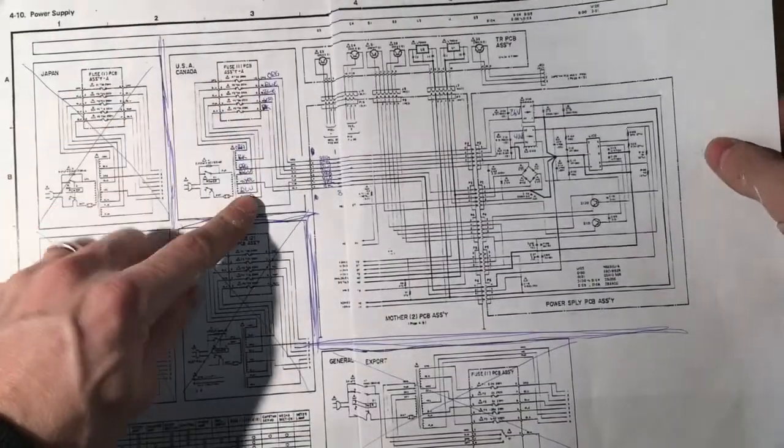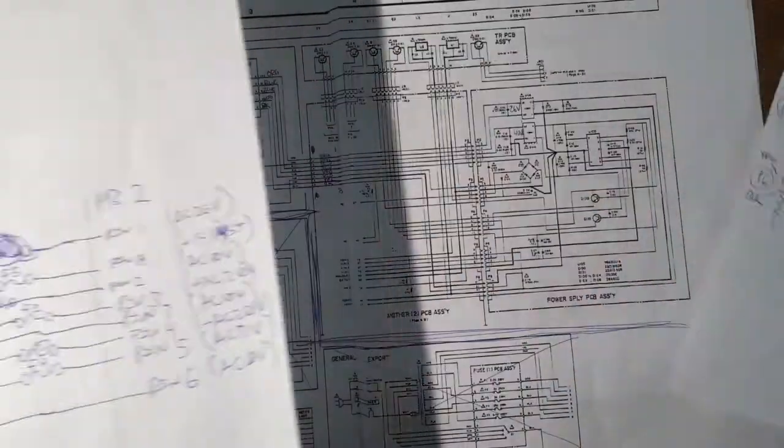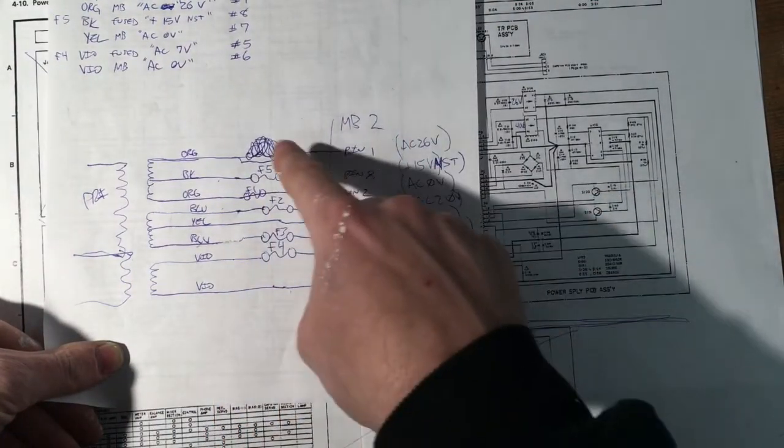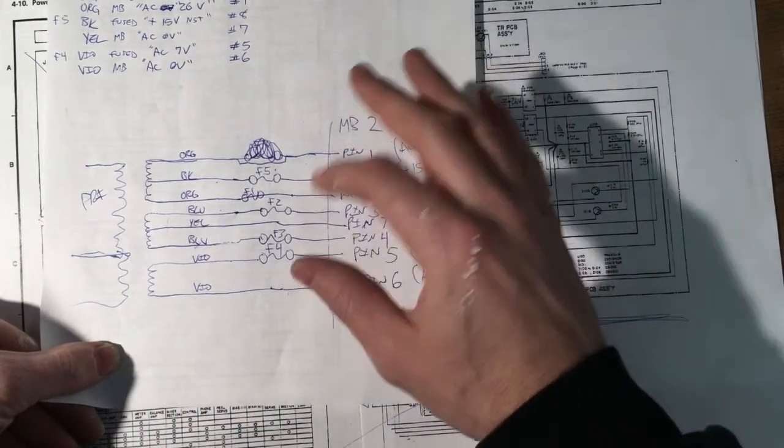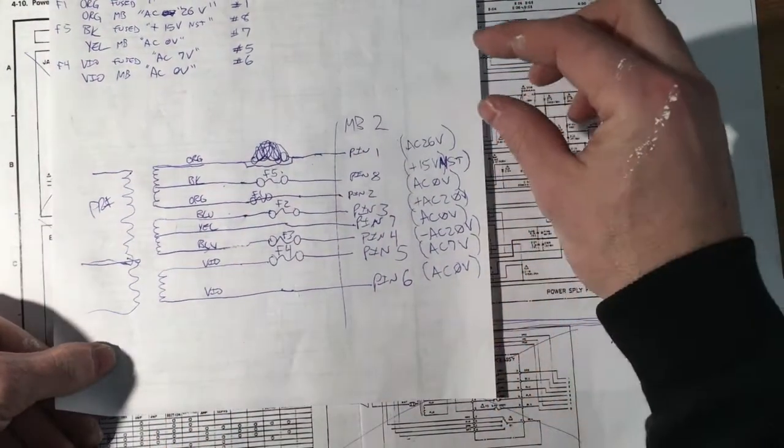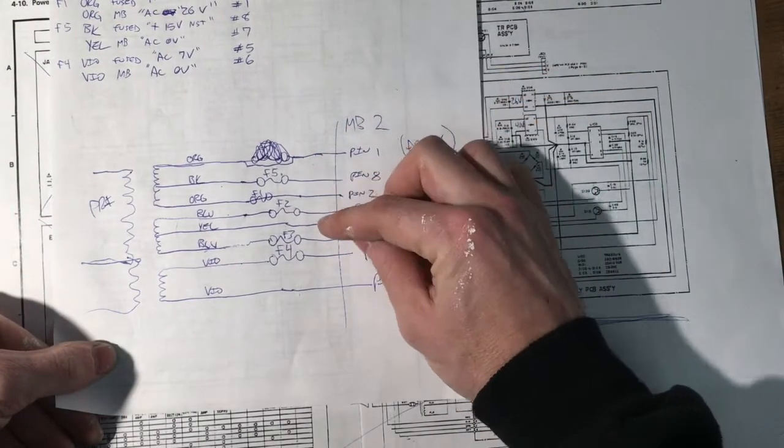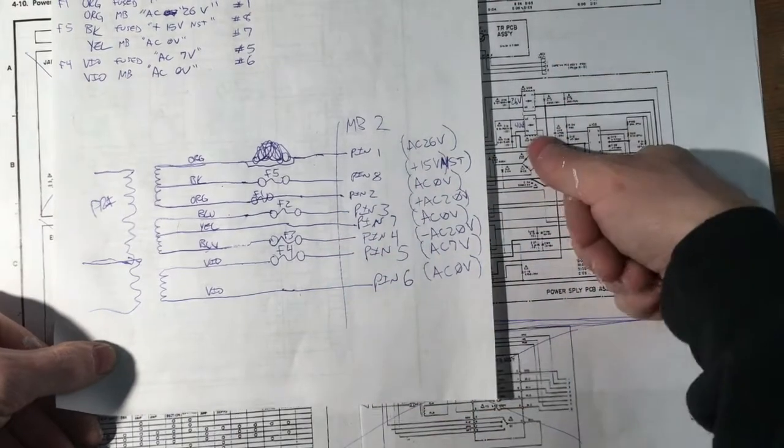But this is what we have to work with. So as you can see, I've been marking it up and even translated some of it. This is everything coming out of the transformer and the different voltages and what is fused, what isn't, and then the center taps. And so basically, you've got 26 volts across here with a center tap, 40 volts across here with a center tap, and then 7 volt, no center tap. And that goes into this power supply.